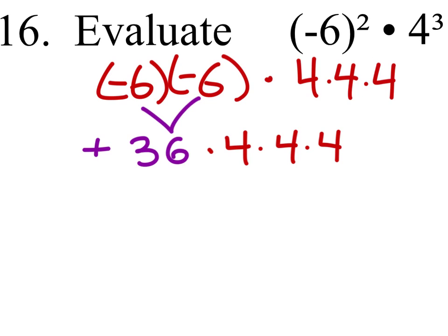Then we can evaluate this. Continuing from left to right, we have 36 times 4, which I'll do on the right. We've got 36 times 4. 4 times 6 is 24. I'll carry the 2. 4 times 3 is 12. Plus 2 is 14. So that's 144.